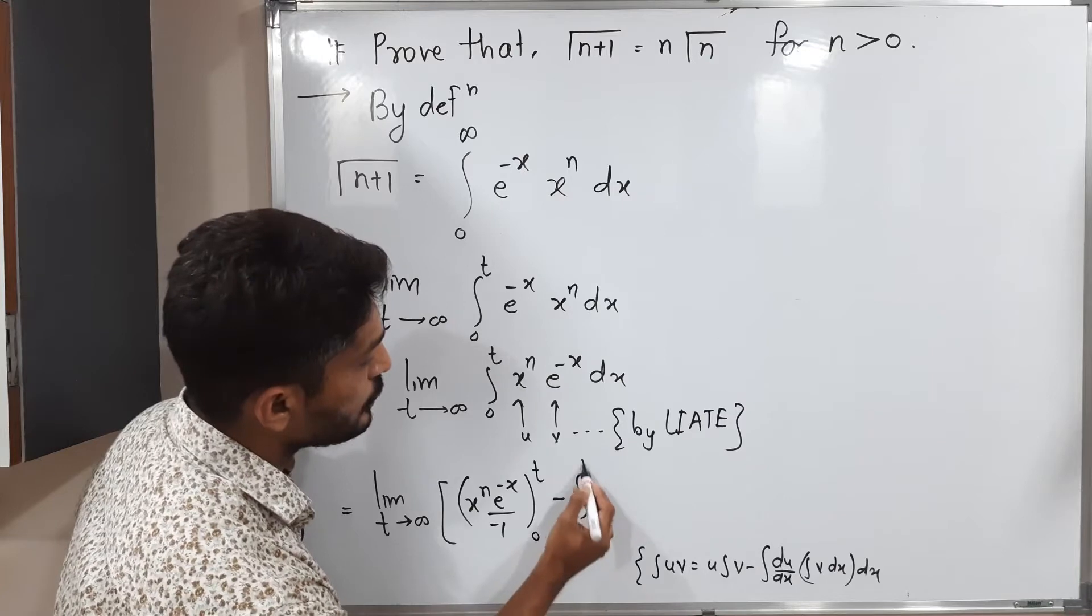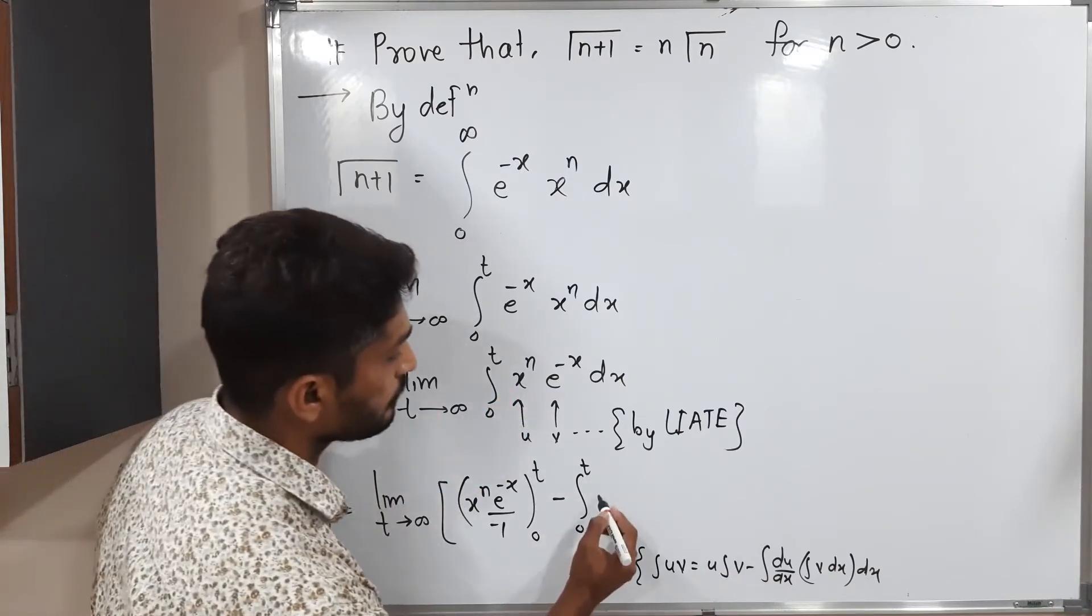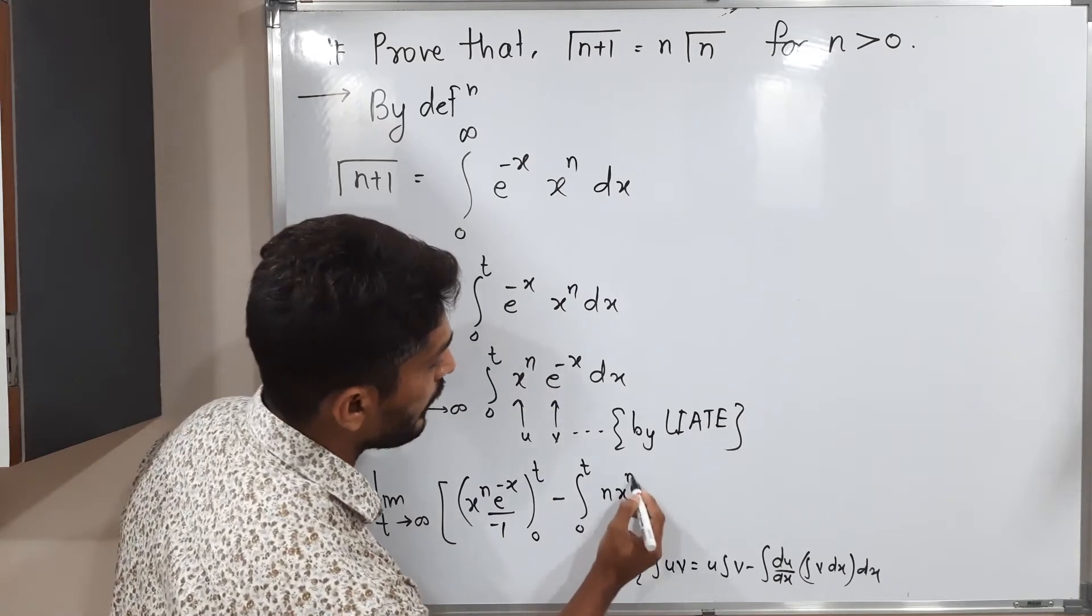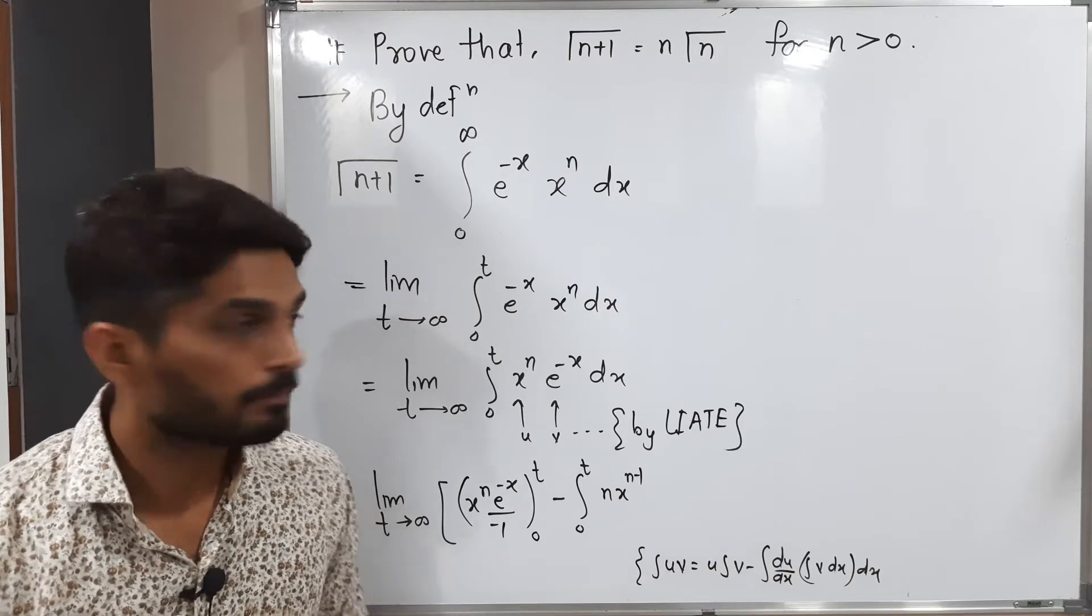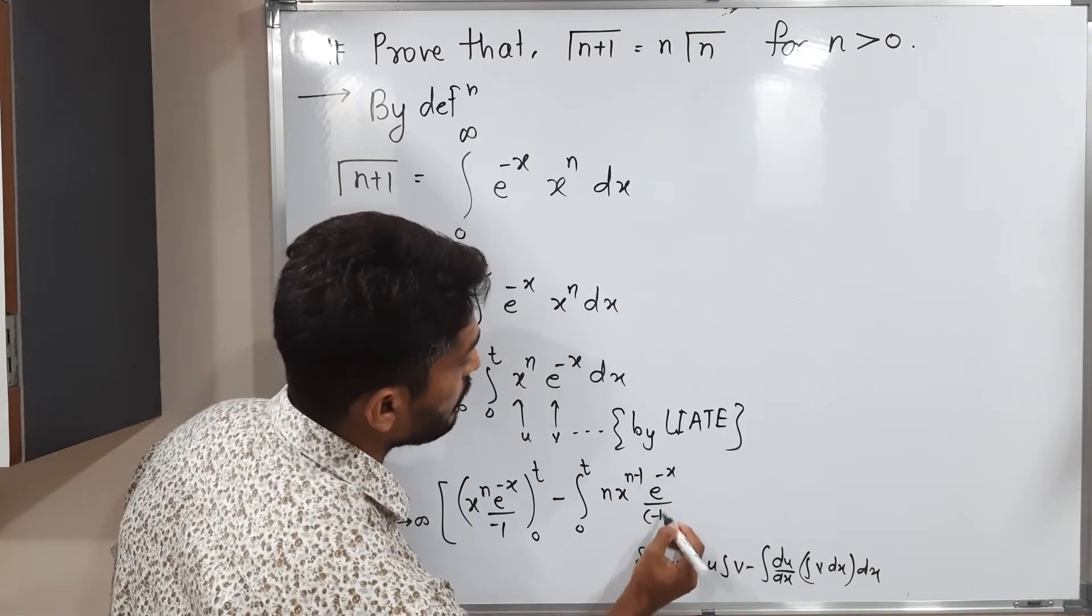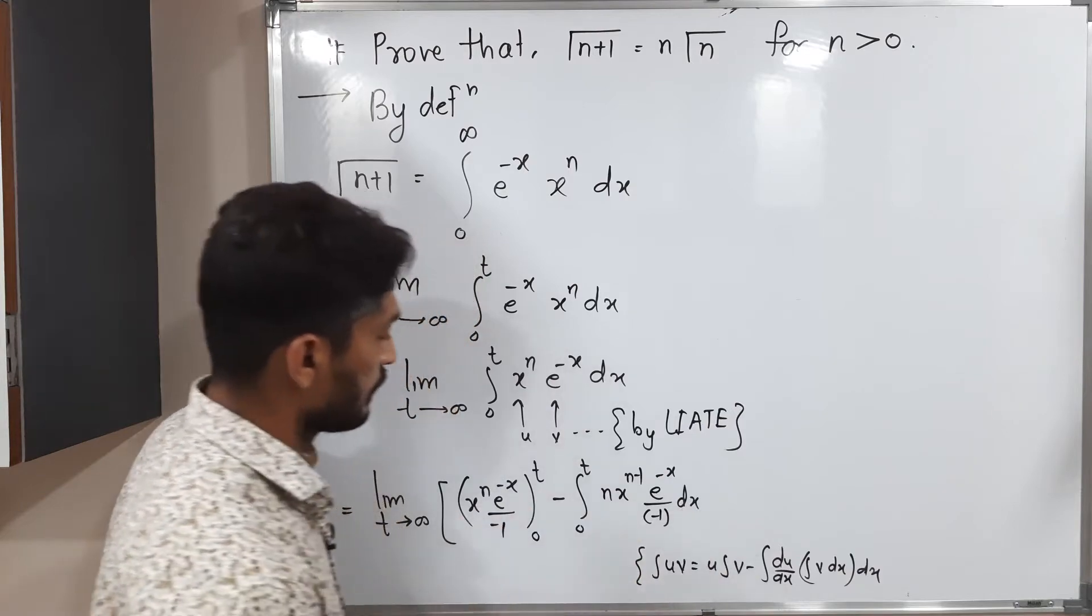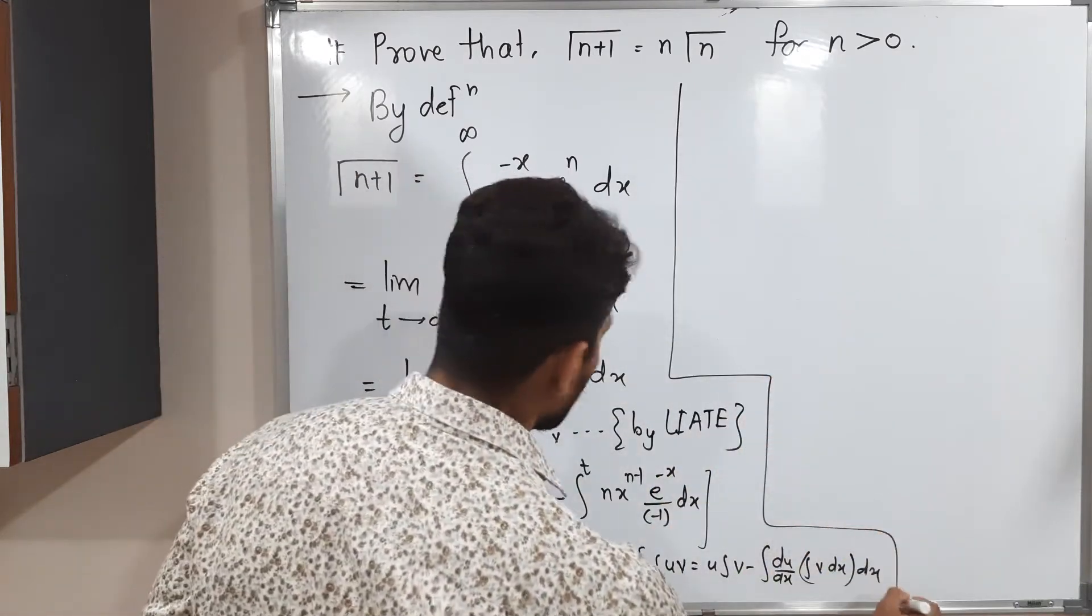Minus integration 0 to t. After that we have to find the derivative of u. What is this derivative? n x raised to n minus 1 into integration of v. What is this integration? e raised to minus x upon minus 1 dx. Let us simplify it further.